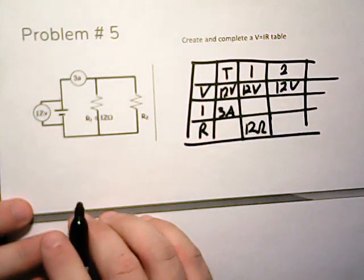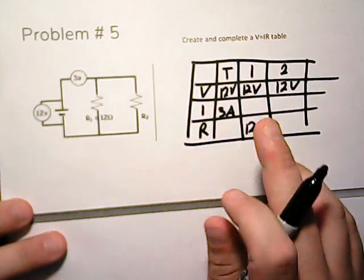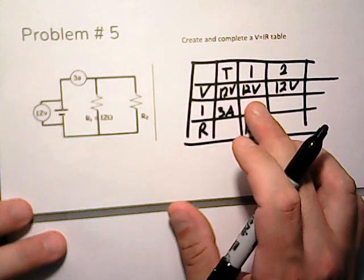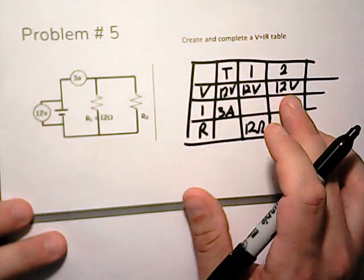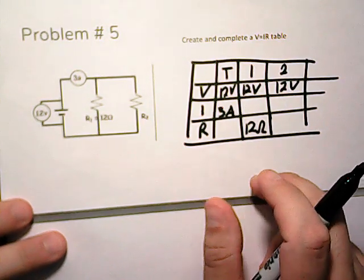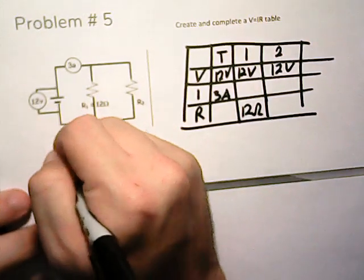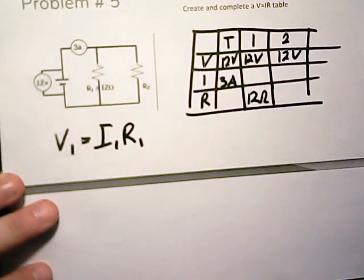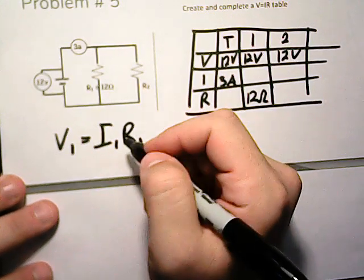So we're going to solve for the missing piece. First we could find the total resistance here, or we could find the total current here. Let's find total current, that way we can find this piece as well. So we know that V1 is equal to I1 times R1.